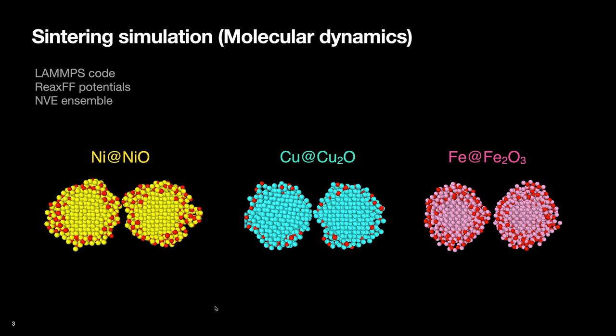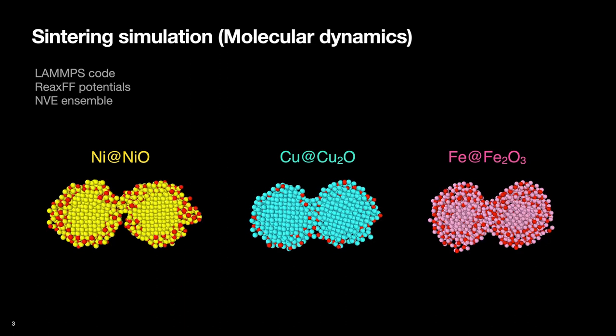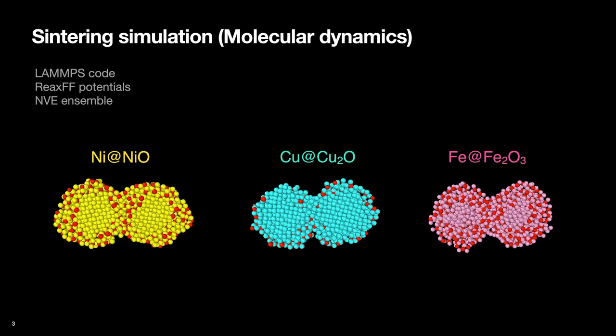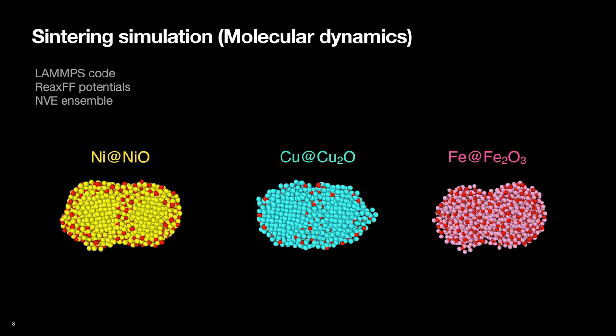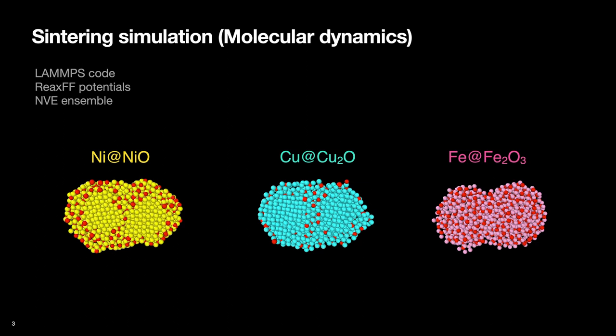We prepared three different types of metal–metal oxide core-shell nanoparticles, which exhibit a crystalline core and amorphous metal oxide shell after equilibrium at given temperatures. Then we let the nanoparticles merge and coalesce together, and studied how the atoms diffuse during the sintering process.